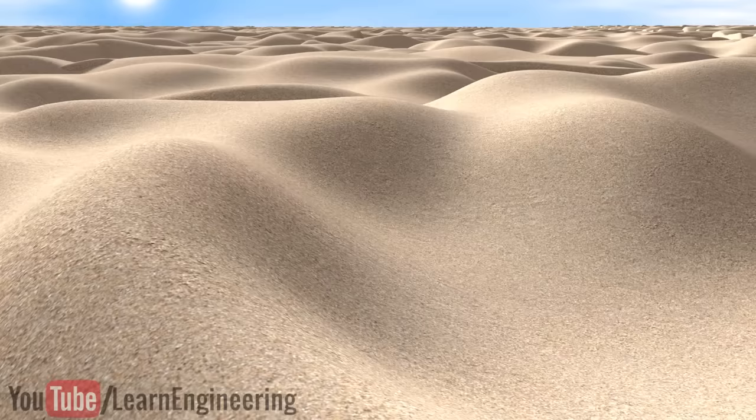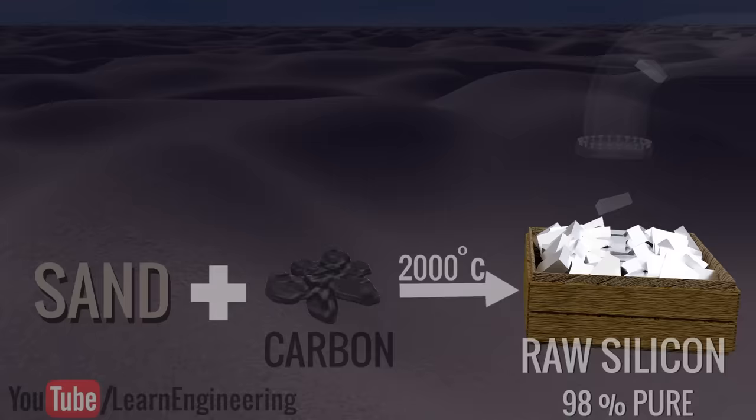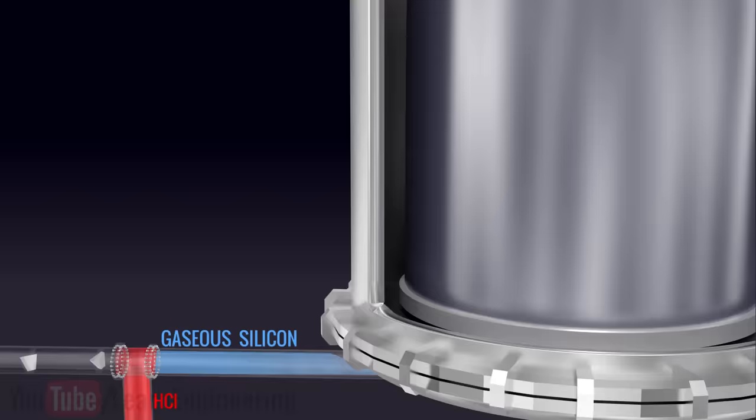To achieve this, the sand has to go through a complex purification process. The raw silicon gets converted into a gaseous silicon compound form. This is then mixed with hydrogen to get highly purified polycrystalline silicon.